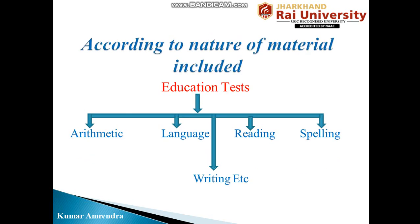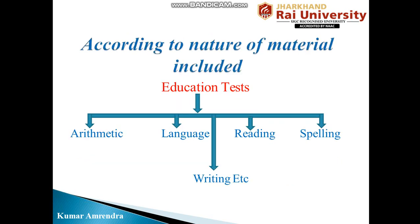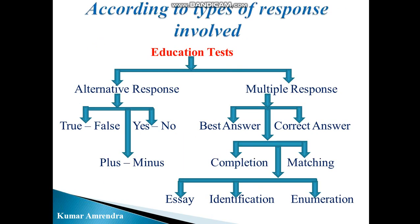According to the nature of material included, the education test can be arithmetic, language, writing, reading, or spelling. According to mental functions, the education test can be associative, writing, memory, recall, or recognition. According to the types of response involved, any education test can be classified into two forms: alternative response and multiple response.